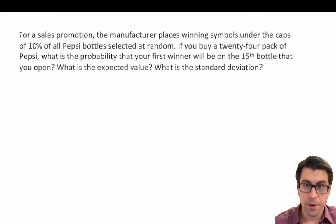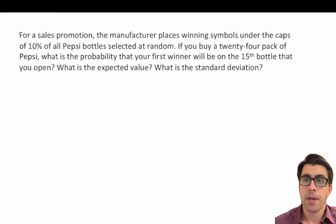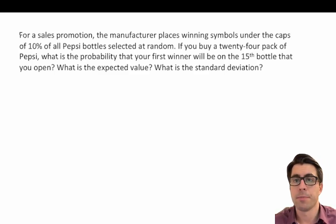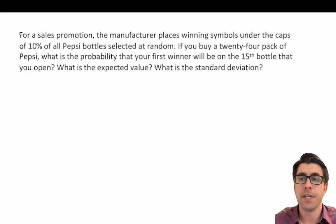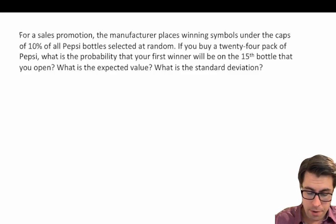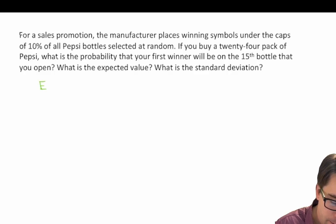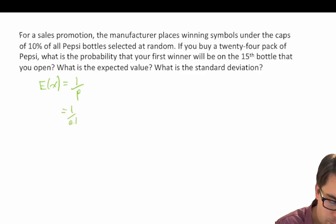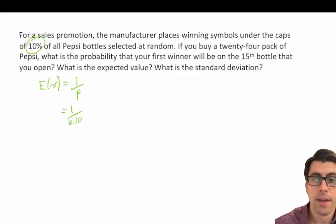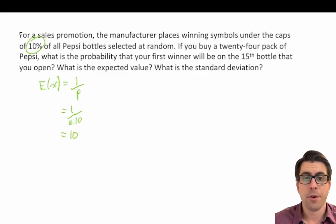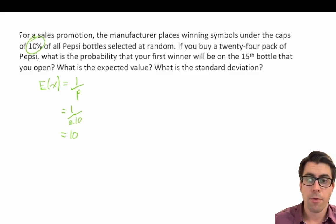For our next question: for a sales promotion, the manufacturer places winning symbols under the caps of 10 percent of Pepsi bottles selected at random. If you buy a 24-pack of Pepsi, what is the probability that your first winner will be on your 15th bottle? What is the expected value and standard deviation? Let's start with the expected value: it equals 1 over p, which is 1 over 0.10, giving us an expected value of 10. On average, you'd have to open 10 Pepsi bottles before finding your first winner.